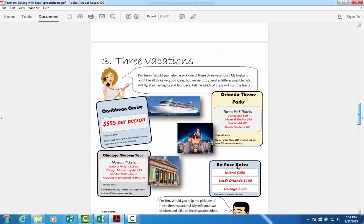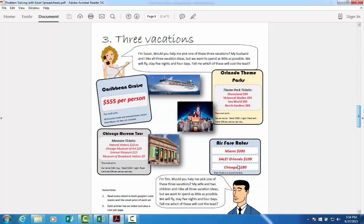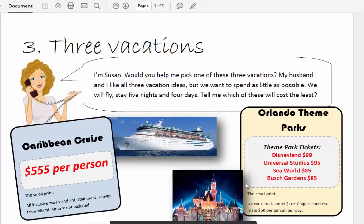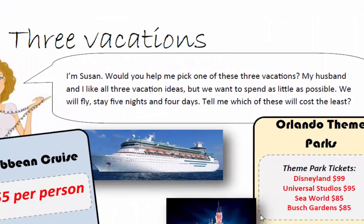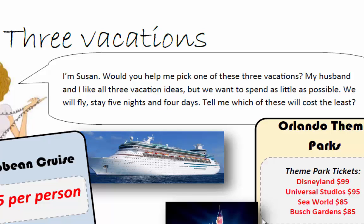Susan and Tim are both going on vacation, and they're going to explore either a Caribbean cruise, Orlando, or Chicago. Susan says: 'Would you help me pick one of these three vacations? My husband and I like all three vacation ideas, but we want to spend as little as possible. We will fly, stay five nights and four days. Tell me which one of these will cost the least.' So we're going to build a spreadsheet to answer that question.